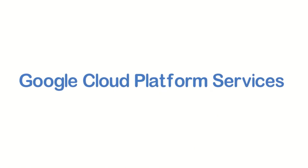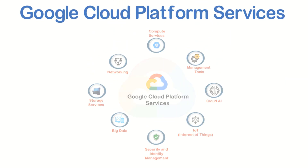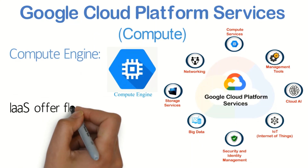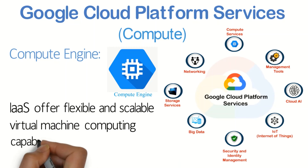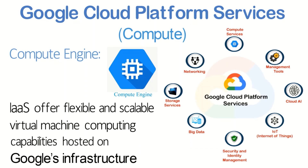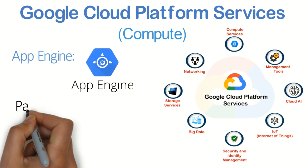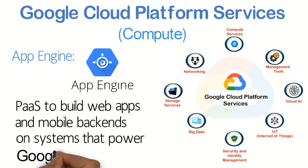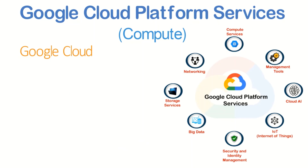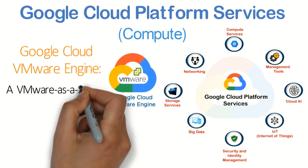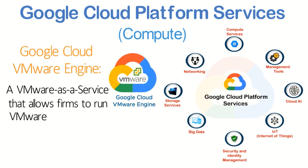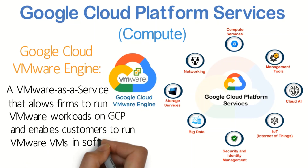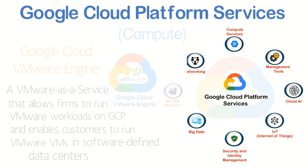Google Cloud Platform Services. Given below are the core services offered by the GCP. Compute: Compute Engine is an IaaS that offers flexible and scalable virtual machine computing capabilities hosted on Google's infrastructure. App Engine is a PaaS to build web apps and mobile backends on systems that power Google applications. Google Cloud VMware Engine is a VMware as a service that allows firms to run VMware workloads on GCP and enables customers to run VMware VMs in software-defined data centers.